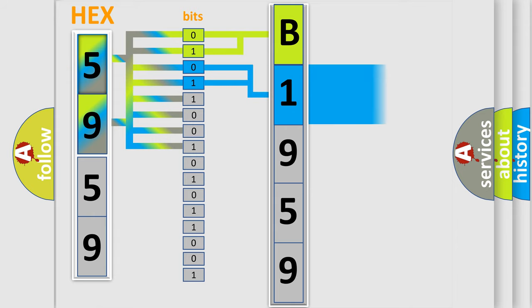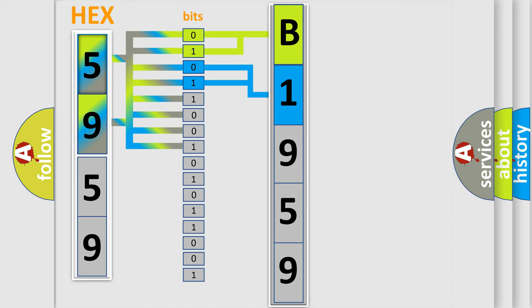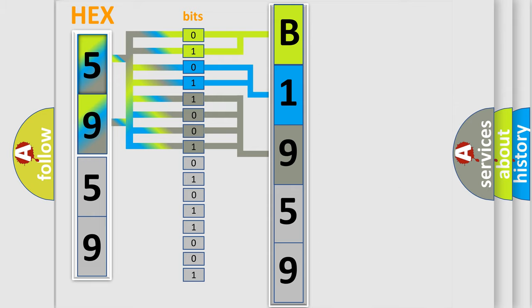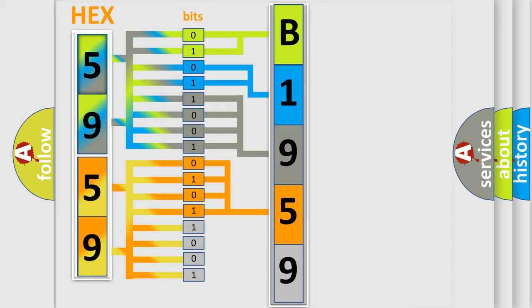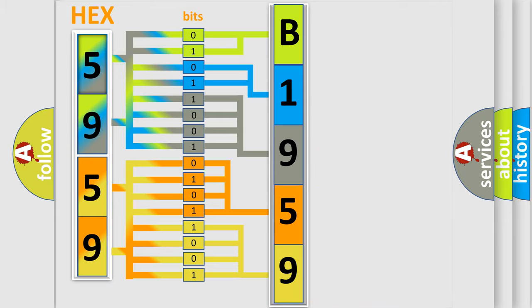The next two bits determine the second character. The last four bits of the first byte define the third character of the code. The second byte is composed of a combination of eight bits. The first four bits determine the fourth character of the code, and the combination of the last four bits defines the fifth character. A single byte conceals 256 possible combinations.